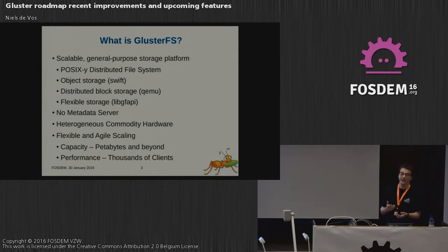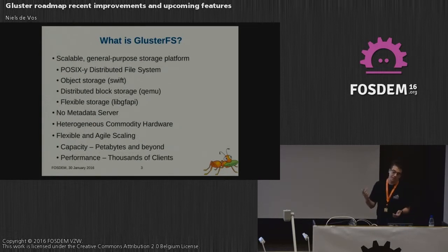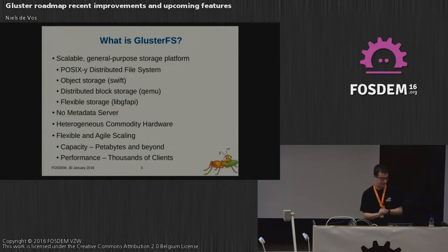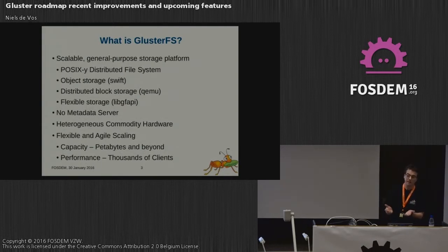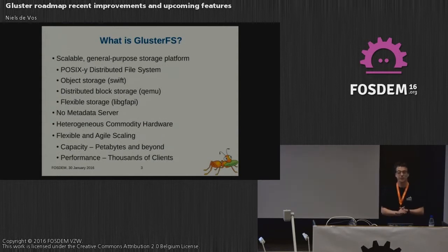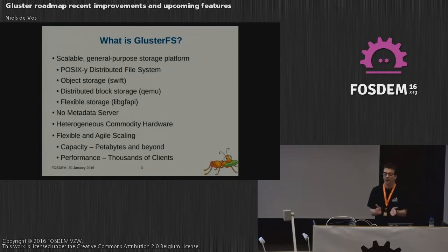You can use Gluster on any hardware you like. Enterprise customers probably buy Dell, HP, or any of the other vendors, with maybe up to 60 disks in a server. At home, in my test environment where I have all my Raspberry Pis and repositories, I use a minimal environment, which is completely the opposite of an enterprise solution, but it works just as well, at least for my use case. So you can run it on pretty much any hardware you like.